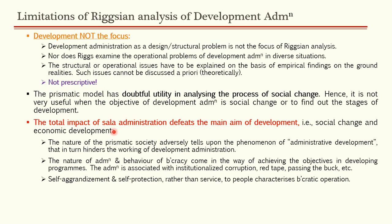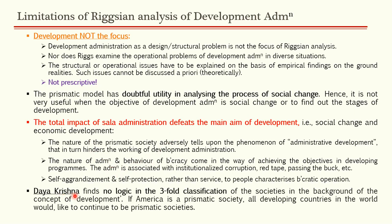Daya Krishna finds no logic in the three-fold classification of societies in the background of the concept of development. After Riggs's modified bilinear theory in which he says America is also a prismatic society, Daya Krishna argues that if America is a prismatic society, all developing countries would want to remain prismatic. This defeats the logic of the three-fold classification of fused, prismatic, and diffracted.